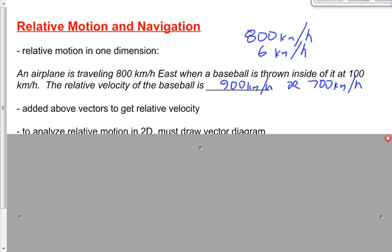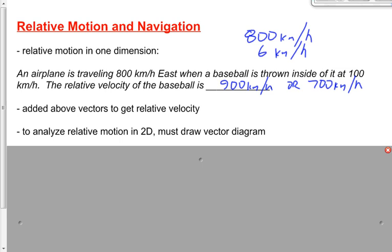When analyzing relative motion in two dimensions, we do essentially the same thing — add the vectors together, but in two dimensions. That means a right-angled triangle vector diagram, specifically a three-vector right-angled triangle vector diagram. We get the hypotenuse using the Pythagorean theorem, then the angle using the inverse tan function. The result could be 900, 700, or some other number entirely, depending on whether the motion is one-dimensional or two-dimensional.